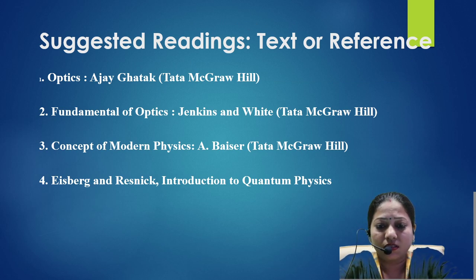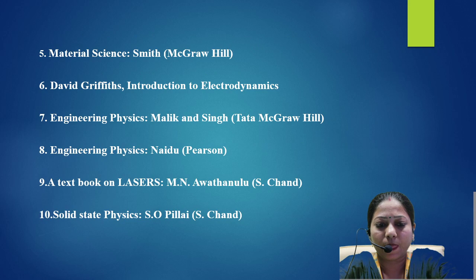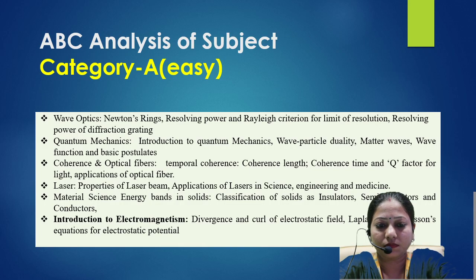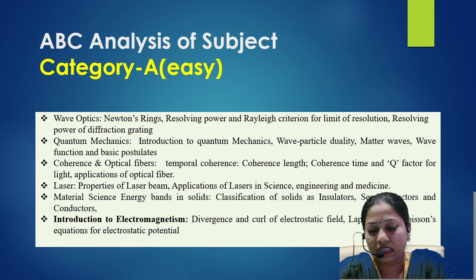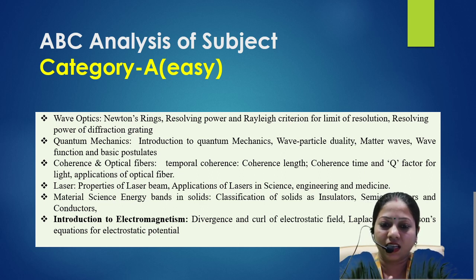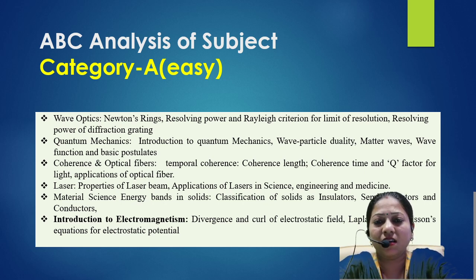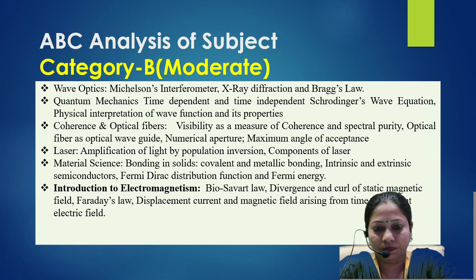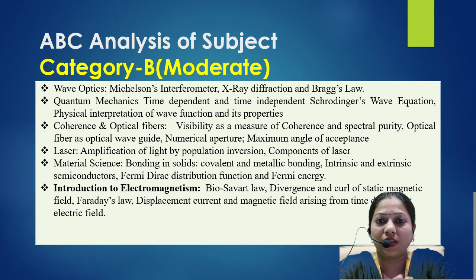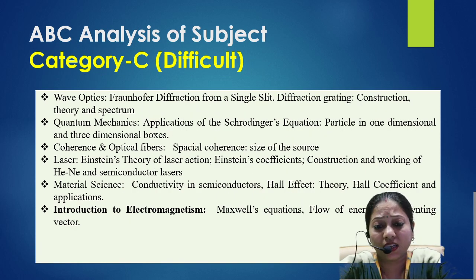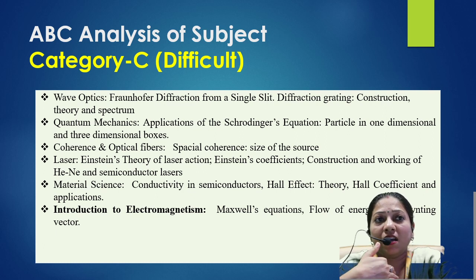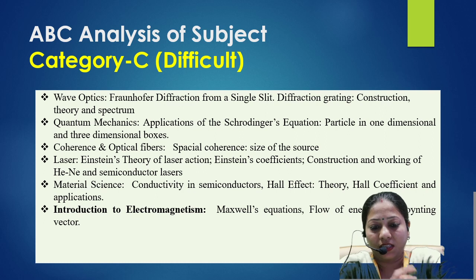For reference, you can use the suggested reading books listed here. We have also done an ABC analysis of the subject, dividing it into three difficulty categories: Category A is easy, suitable for below-average students; Category B is moderate, which average students can easily understand; and Category C is difficult, and we will place more emphasis on these topics.